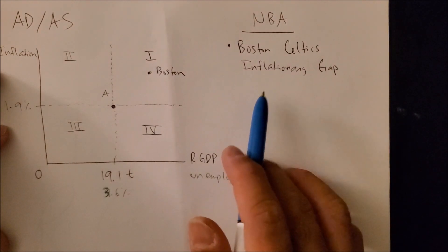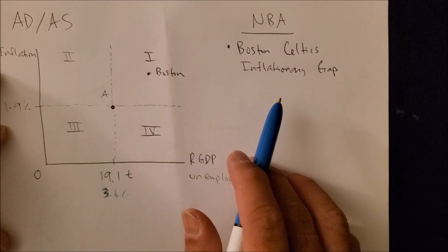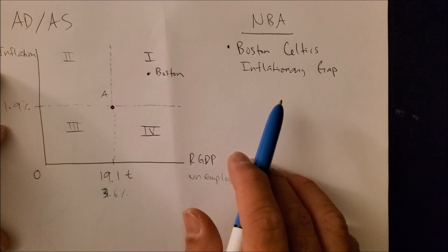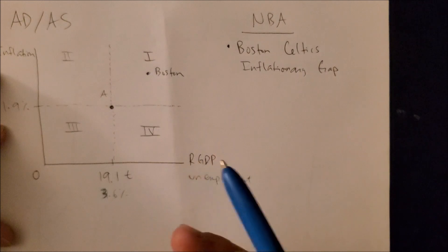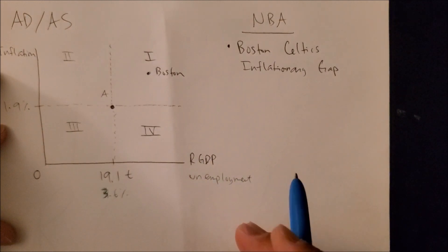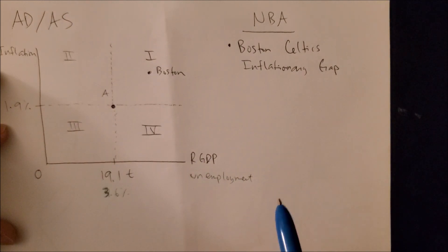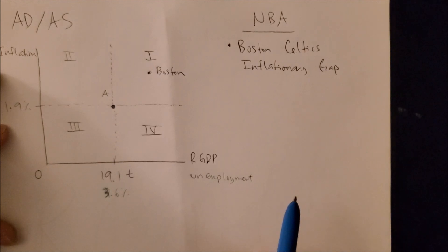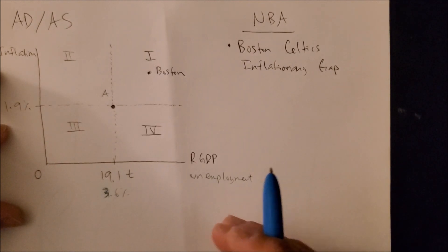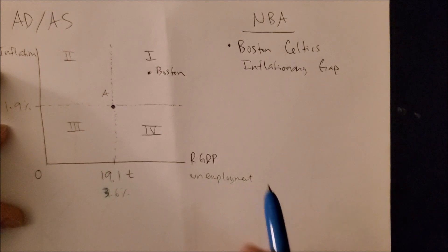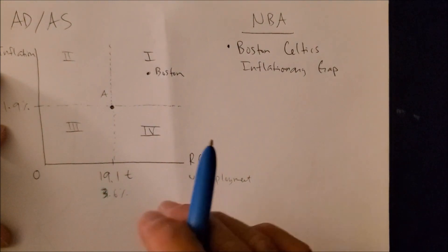Some examples of an inflationary gap include different markets such as the housing market, where more people buying homes drives up prices, leading to a bubble — and we know a bubble must eventually burst. Hence the economy at this point is overheating: an inflationary gap.